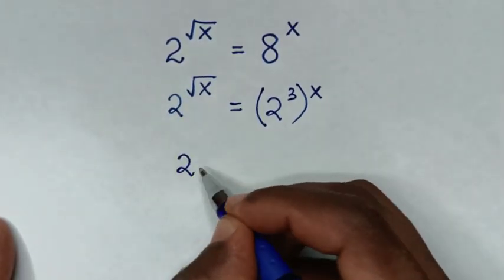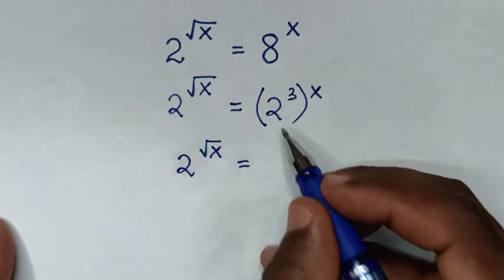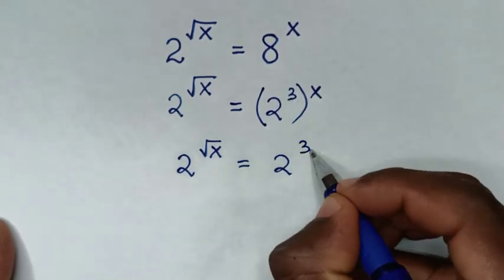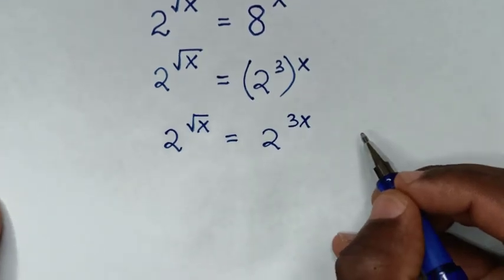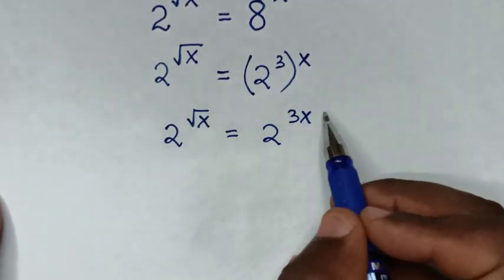Then it will be 2 power of square root of x is equal to 2 power of 3 times x is power of 3x. Now in here, we have same base of 2, so we will compare the powers.